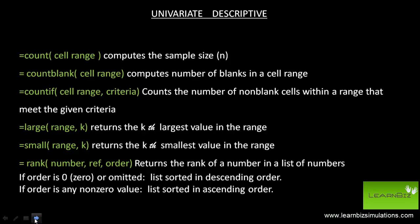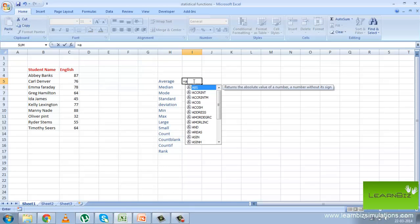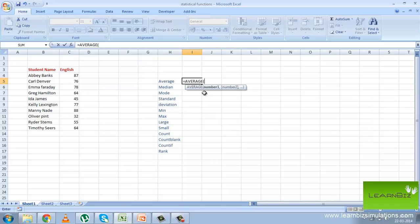If the array range contains text, logical values, or empty cells, it is ignored. But if a zero is present, the value is included. Now let us look at how these functions are used in the worksheet.